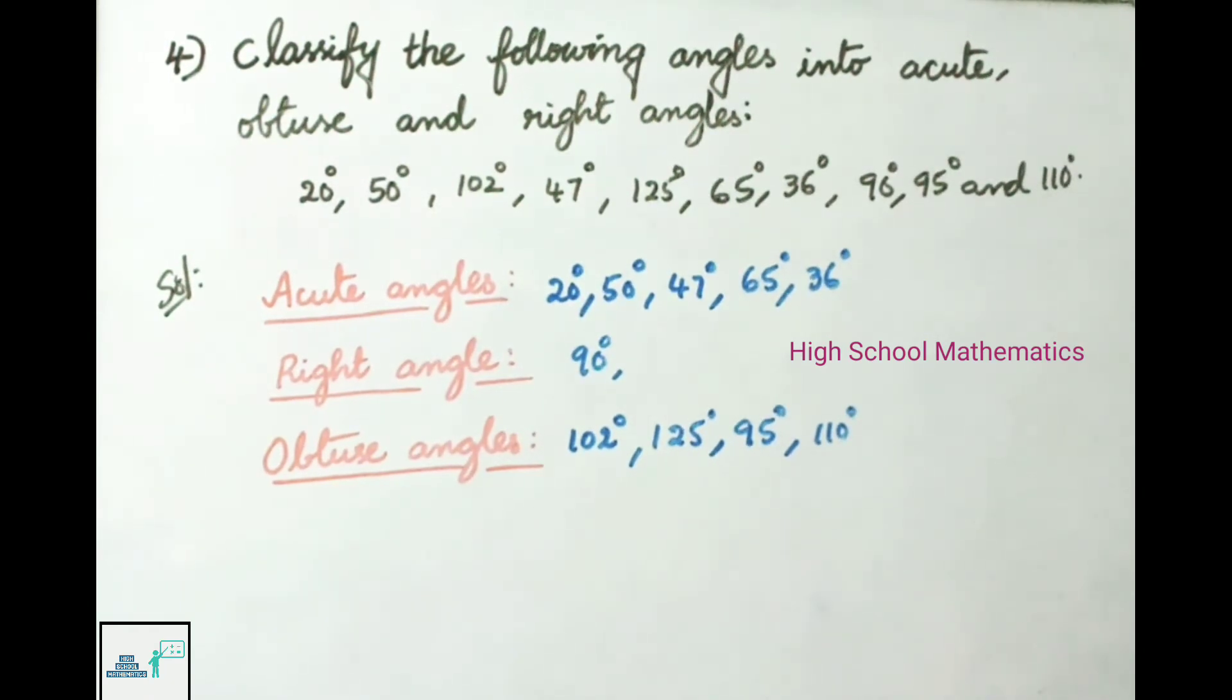Next one: The angles which are greater than 90 and less than 180 degrees are called obtuse angles. So let us write: 102 degrees, 125 degrees, 95 degrees, and 110 degrees. All these four are obtuse angles.